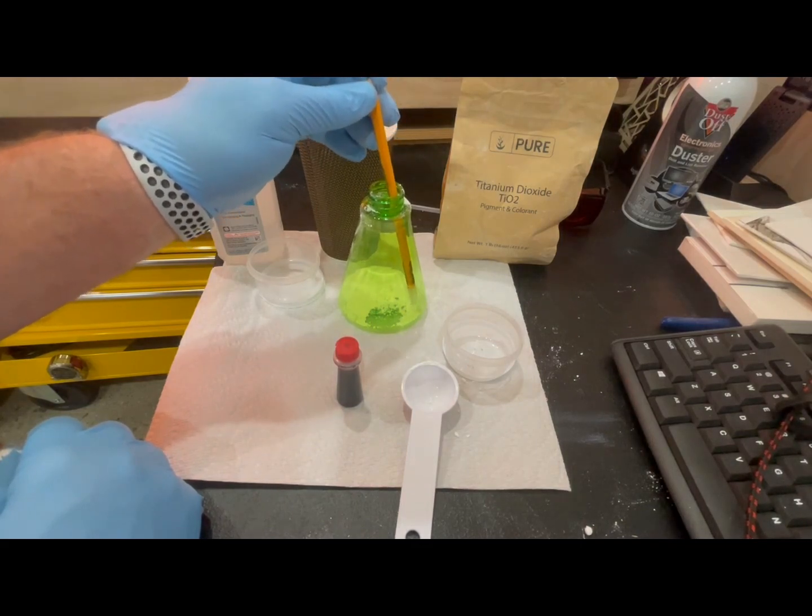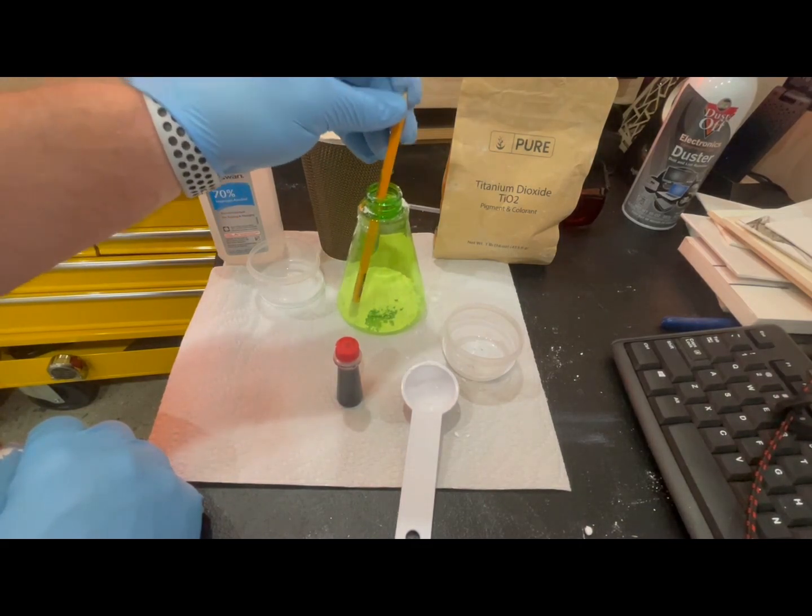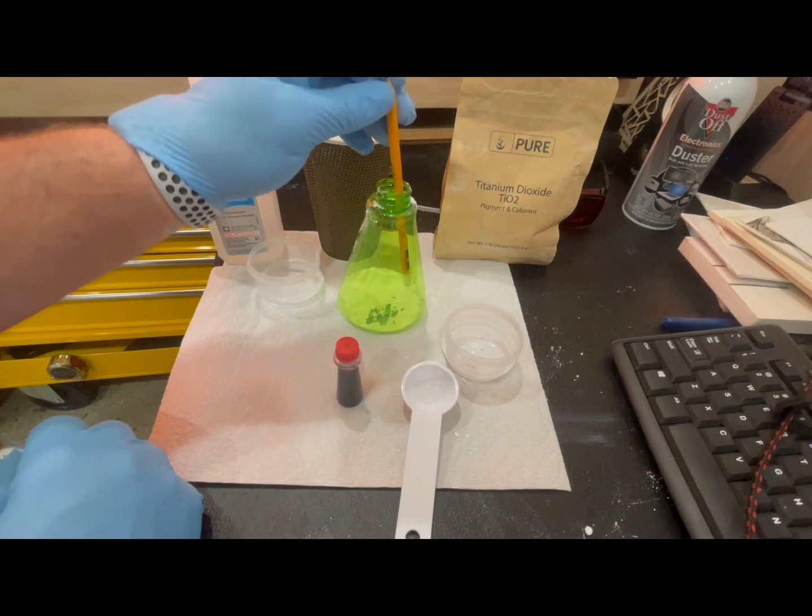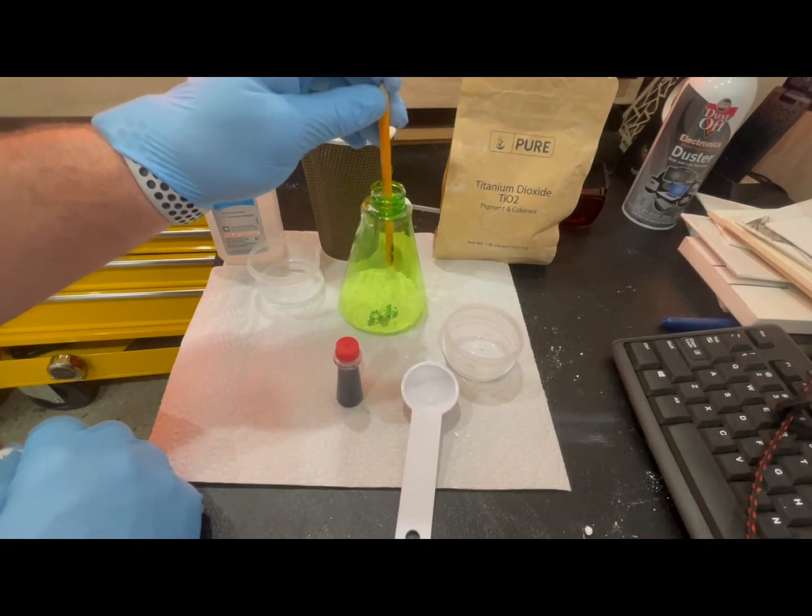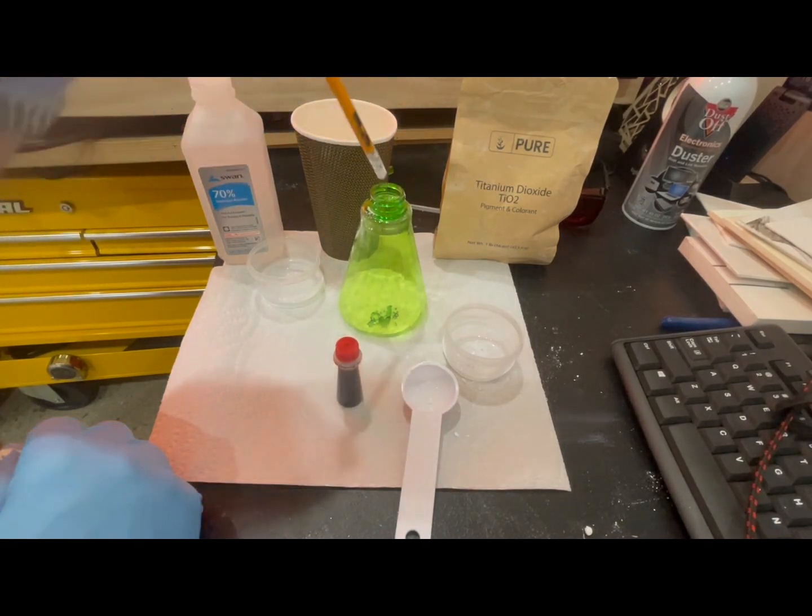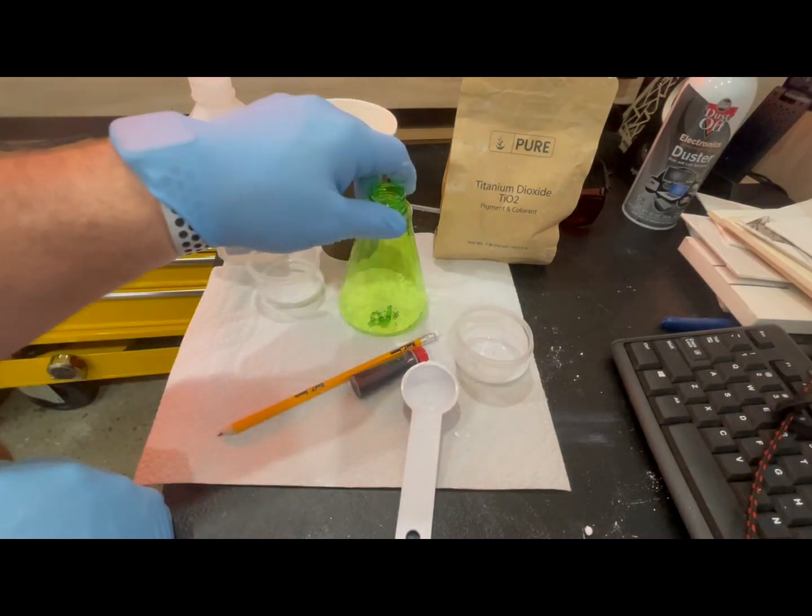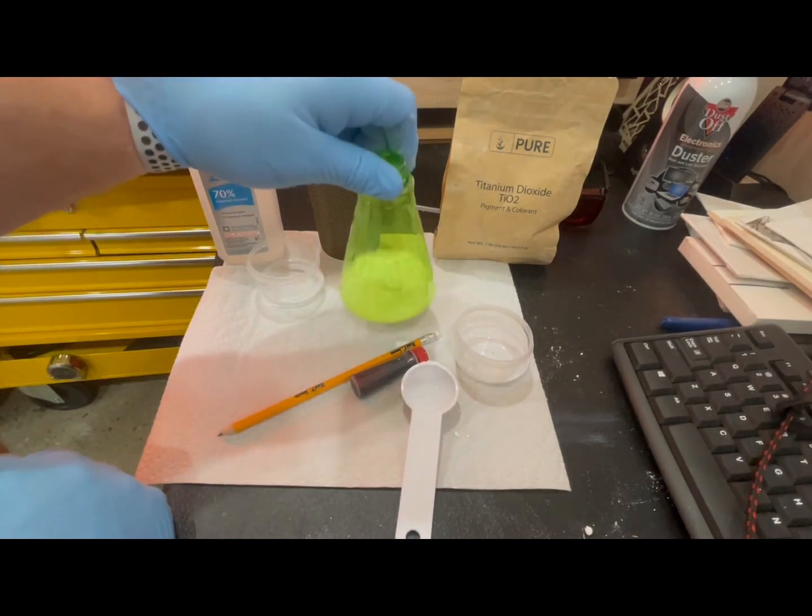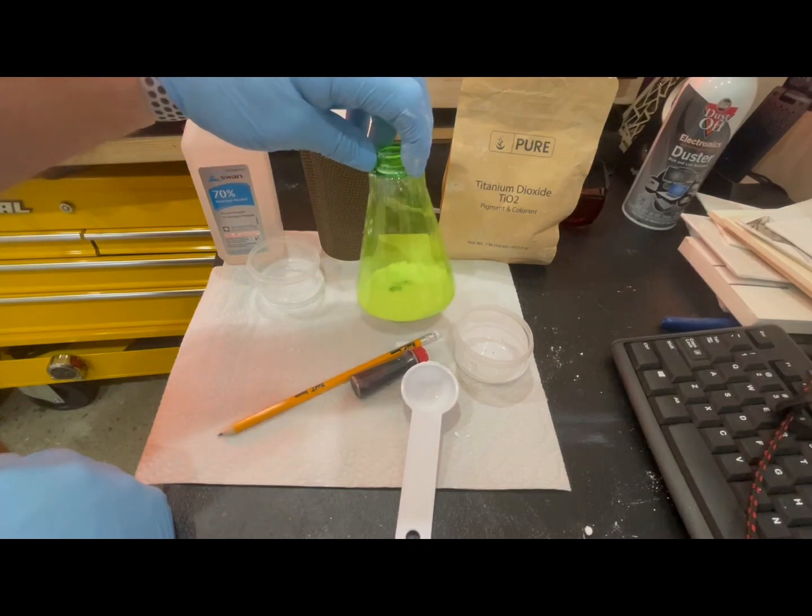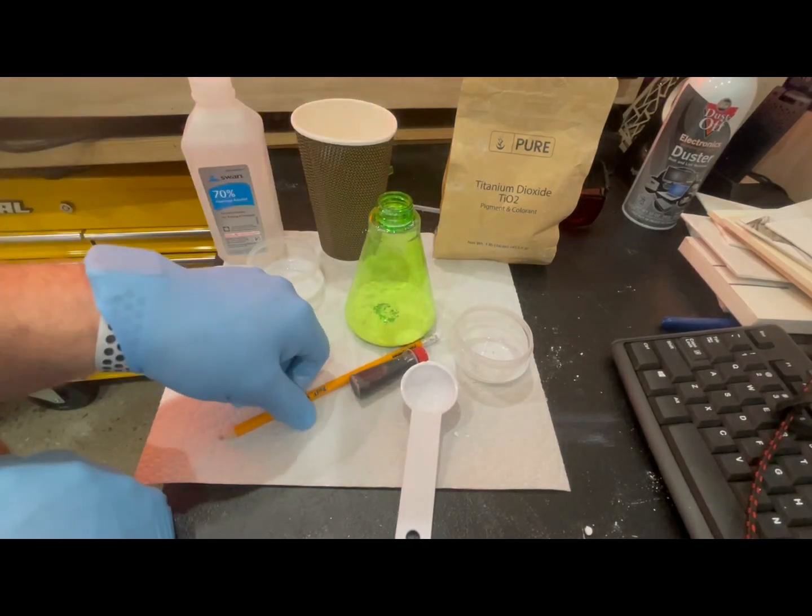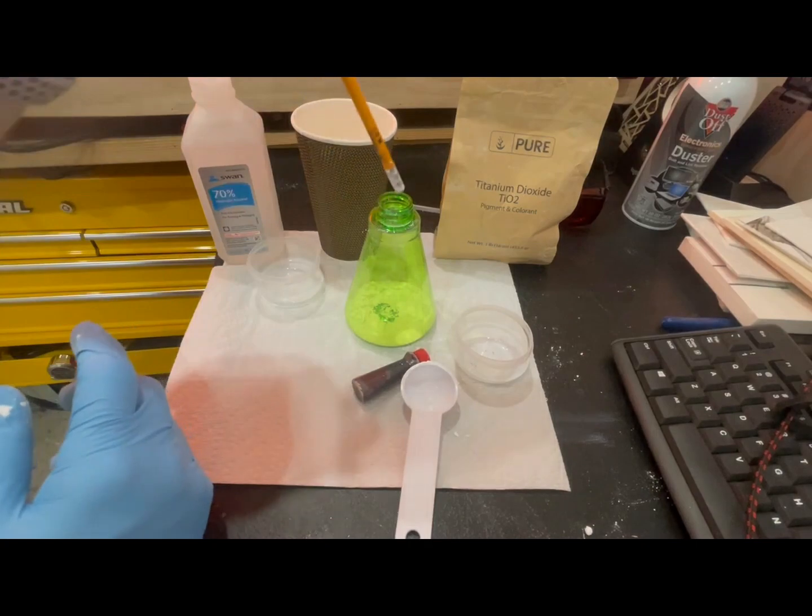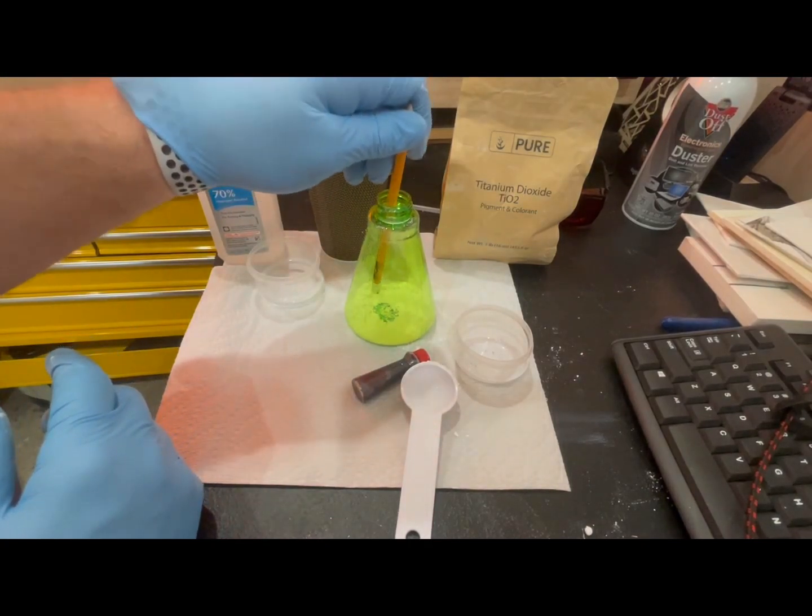You can see I got a few chunks in here, so again I just go in there and smash them up a little bit. I try to get that as fine of a powder as I can. If I spread this out, you can see it's about an even coat all the way on the bottom.